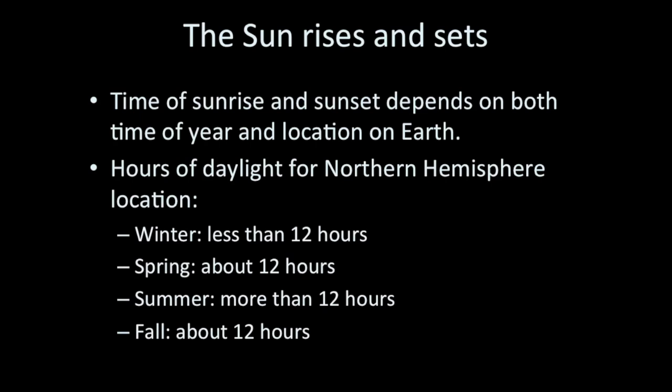How do we know whether the Sun will spend more, less, or about 12 hours above the horizon? If its path is mostly above the horizon with less of its path below the horizon, then it will spend more than 12 hours above the horizon. And if the path is above the horizon for half of its apparent motion, then it will spend about 12 hours.